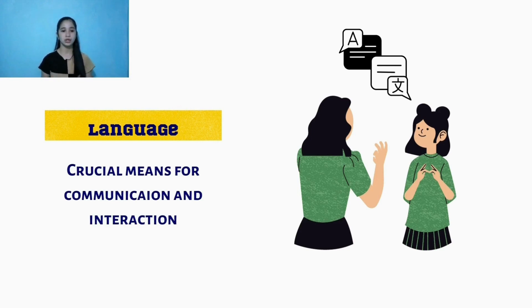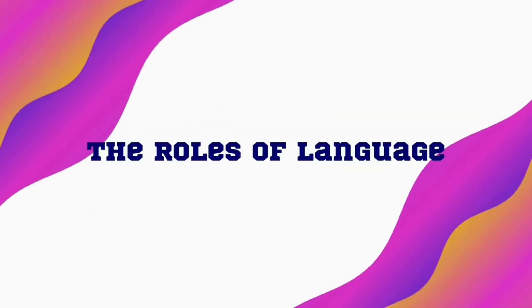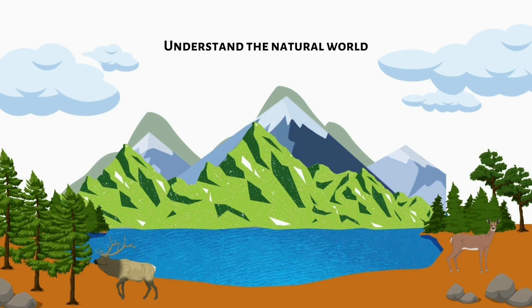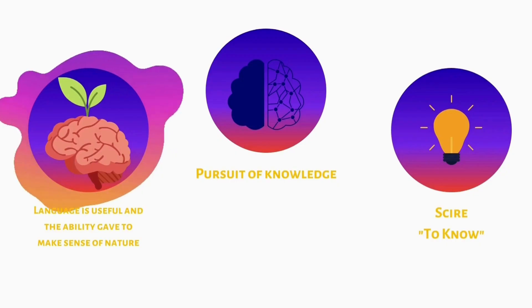The rule of language: First, is to understand the natural world, the ability to name and classify objects in nature. Second, language is useful in the ability it gave to make sense of nature.